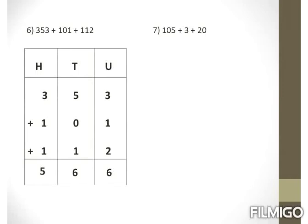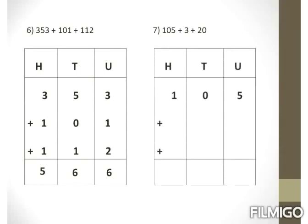Example 7: 105 plus 3 plus 20. We have a 3-digit number 105, a single-digit number 3 (units place only), and 20 which has 2 at tens place. Adding units first: 5 plus 3 is 8. Tens: 0 plus 2 is 2. Hundreds: 1 comes as it is. Answer is 128.